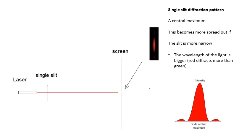And this maximum becomes wider if we make the slit narrower, or if we use a bigger wavelength. So, for example, a red would have a wider diffraction pattern than if we used a green laser. So there's a wide central maximum. And the width of the maximum depends on the wavelength and it depends on the size of the slit.